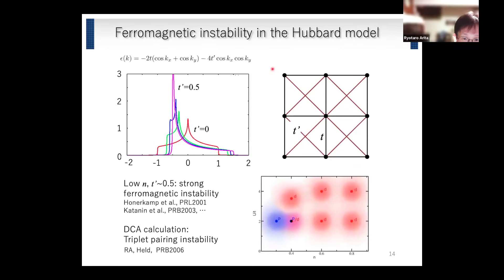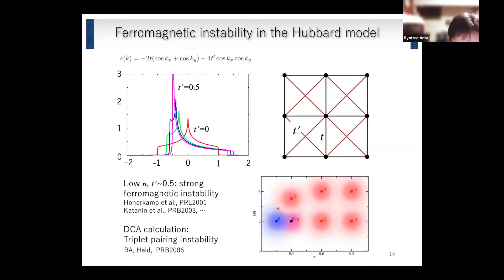They studied the two-dimensional Hubbard model with next-nearest-neighbor hopping t'. When t' is as large as 0.5, the van Hove singularities move to the bottom of the band. When the density is low enough, ferromagnetic spin fluctuation becomes very strong. This problem has been studied by many people — Castillo, Honerkamp, Andre Katanin. In 2006 we also pointed out that triplet superconductivity can be dominant when spin fluctuation becomes very strong, from a dynamical cluster approximation phase diagram.